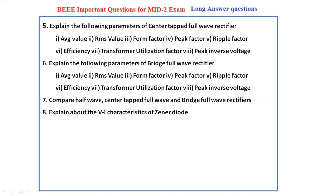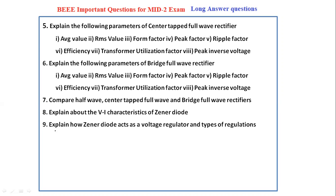Next, explain about the VI characteristics of the Zener diode. This question is in the fourth unit under special purpose devices. You have to explain what is a Zener diode, draw the diagram, and explain the forward bias and reverse bias characteristics. Next, explain how the Zener diode acts as a voltage regulator and describe the types of regulation — line regulation and load regulation — with diagrams.